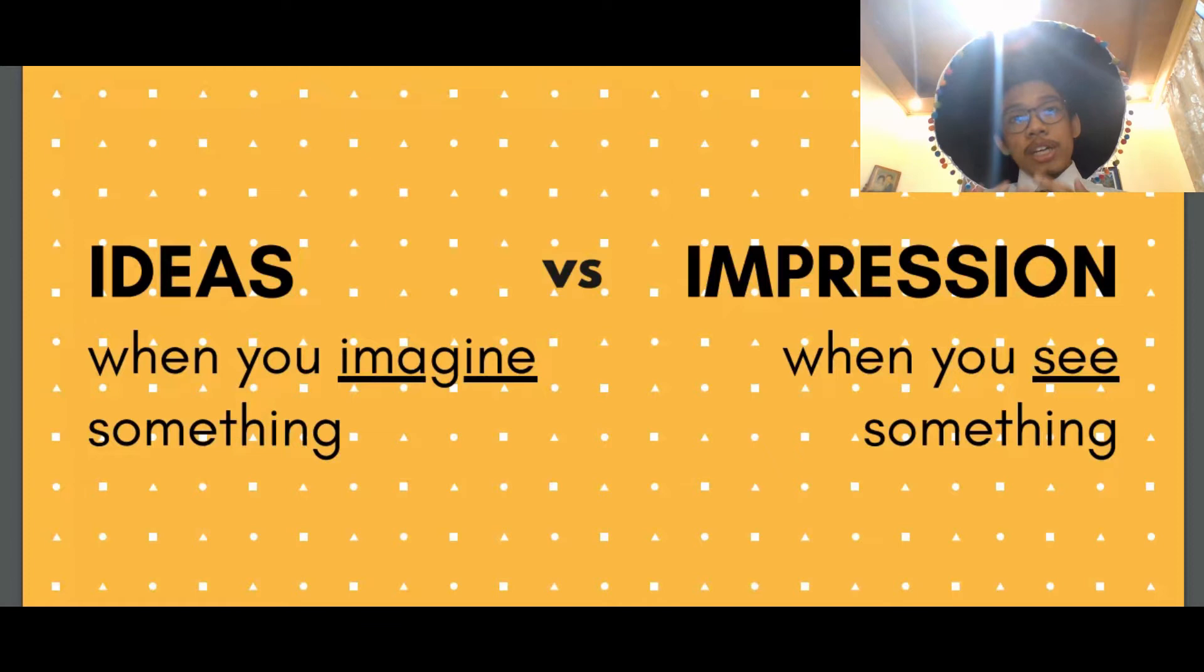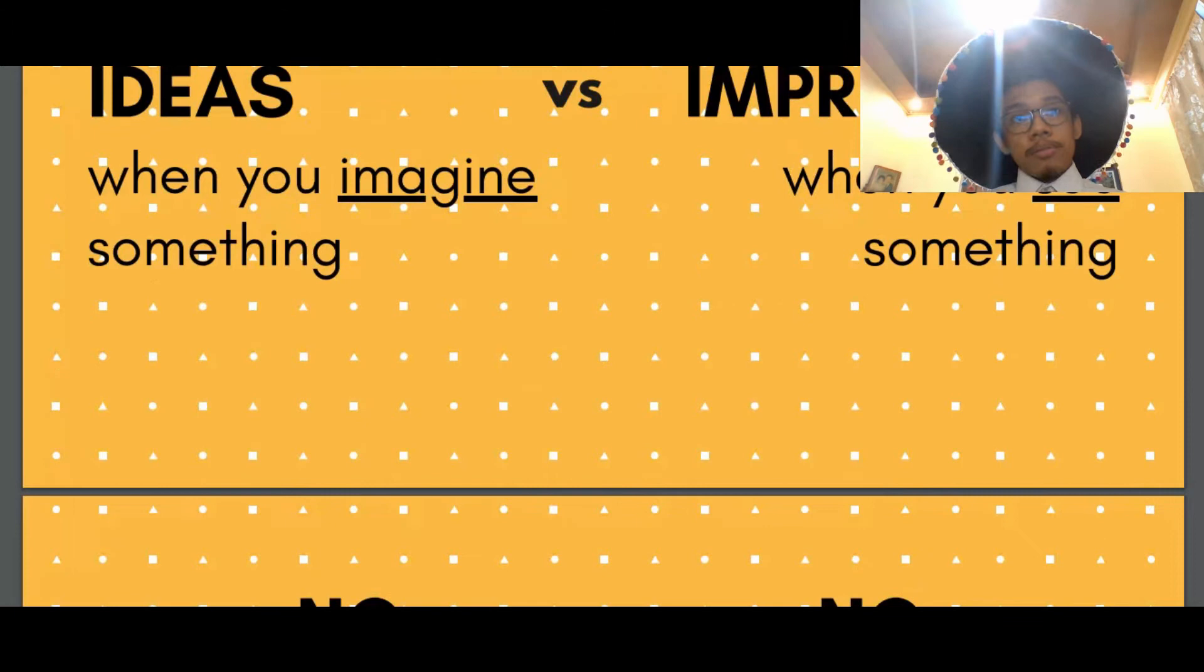A very good example would be an impression is when you see a red book. For example, you're walking down the street or you're walking in the library and you saw a red book on a shelf. That's an impression. It gives you the impression of a book that is colored red.